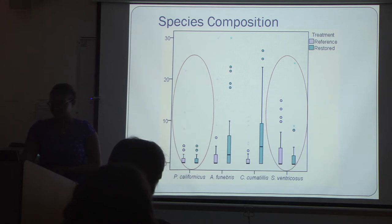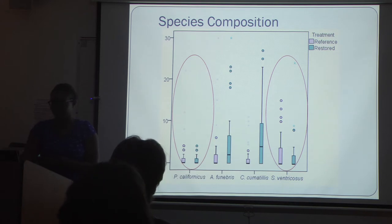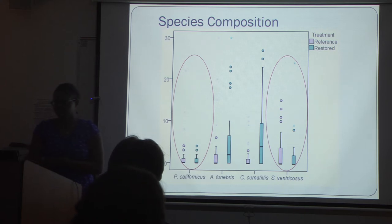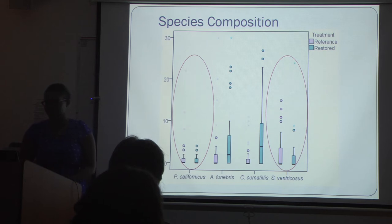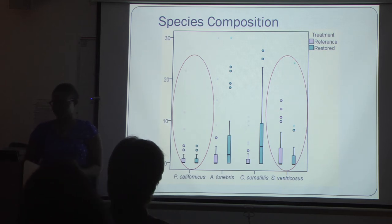P. californicus and S. ventricrosis both had the same means of the total abundances between restored and reference sites. The abundances of P. californicus were especially low at this site, and both species did not respond to whatever differences there were in the restored and reference sites.